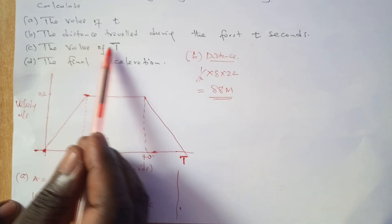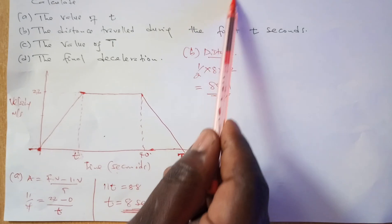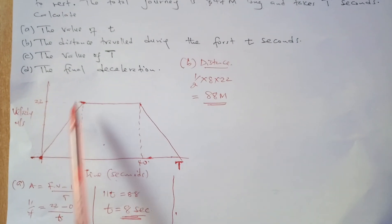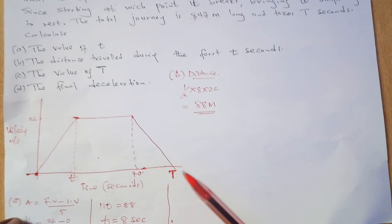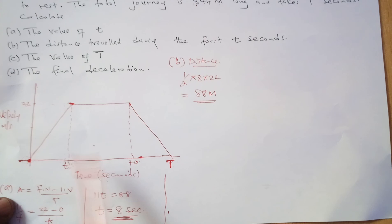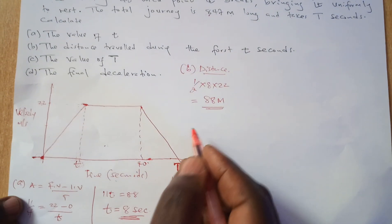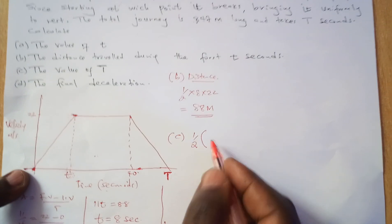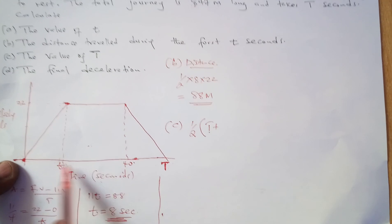Part c asks for capital T, the total time. We are given total distance 847 meters. In most questions like this, the maximum velocity is known but total time is missing, so use the area under the trapezium. Area of trapezium equals half times the sum of the parallel sides — capital T plus the segment from t to the end — times height 22, set equal to 847. The segment from 8 to 40 is 32 seconds.